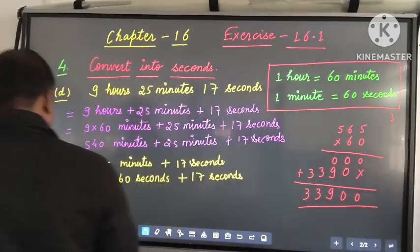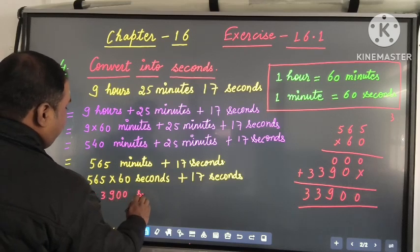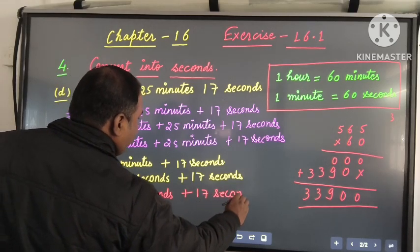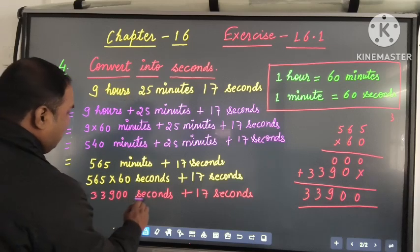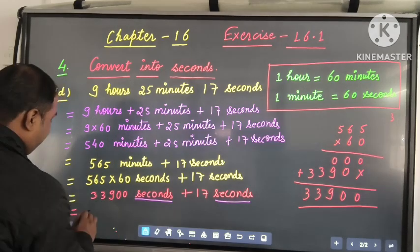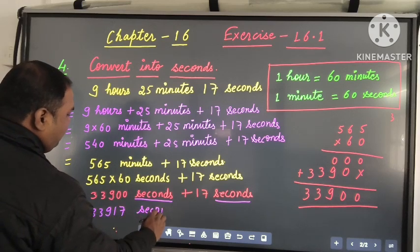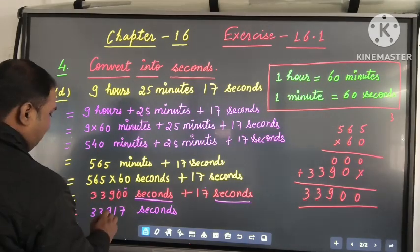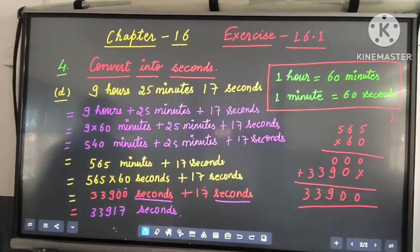Working through the multiplication, we get 33,900 seconds plus 17 seconds. Now you can see both numbers have the same unit — seconds — so we simply add: 33,900 plus 17 equals 33,917 seconds. Checking: 0 plus 7 is 7, 0 plus 1 is 1, then 9, 3, 3 — so 33,917 seconds. That is the answer for 4d.